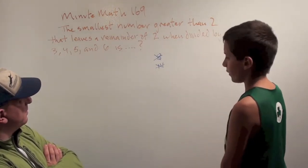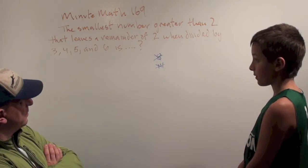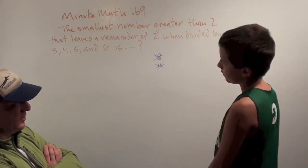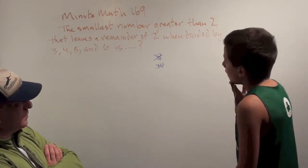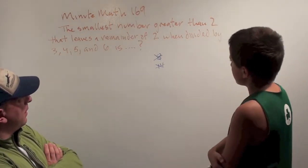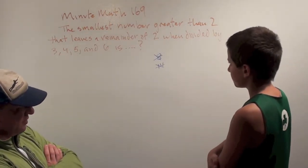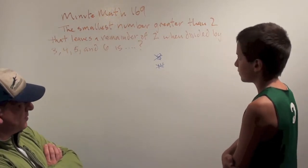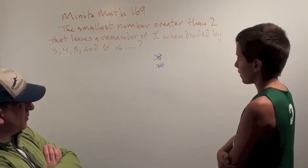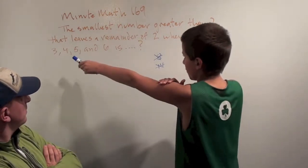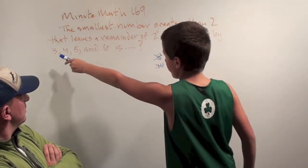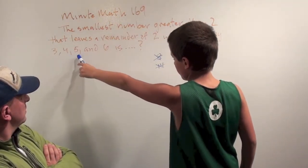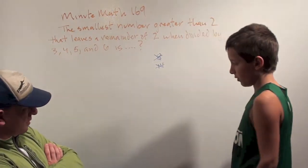Well, if we go to a pretty large one. Well, but then you won't know if you found the smallest one. How can we speed this up rather than just listing all the numbers that are 2 more than a multiple of 6? Well, we need it to be 2 more than a multiple of 3, 2 more than a multiple of 4, 2 more than a multiple of 5, and 2 more than a multiple of 6. Aha.